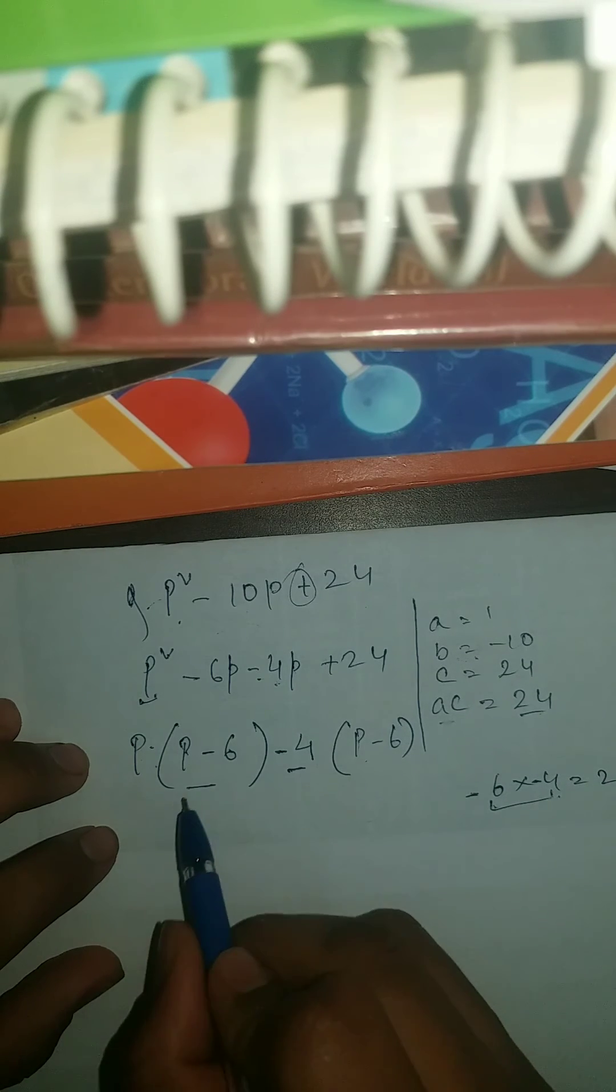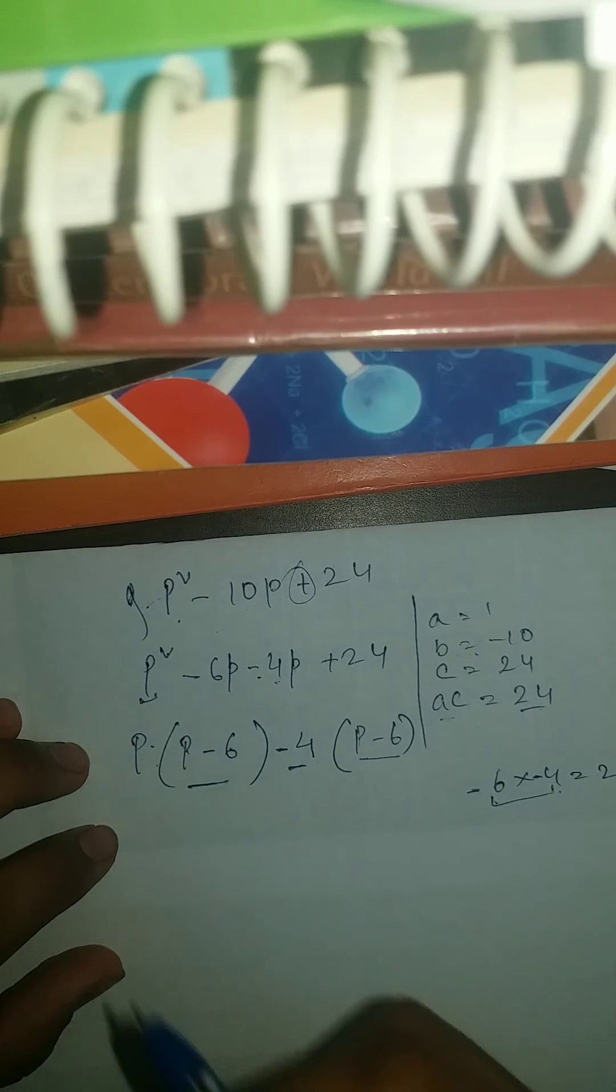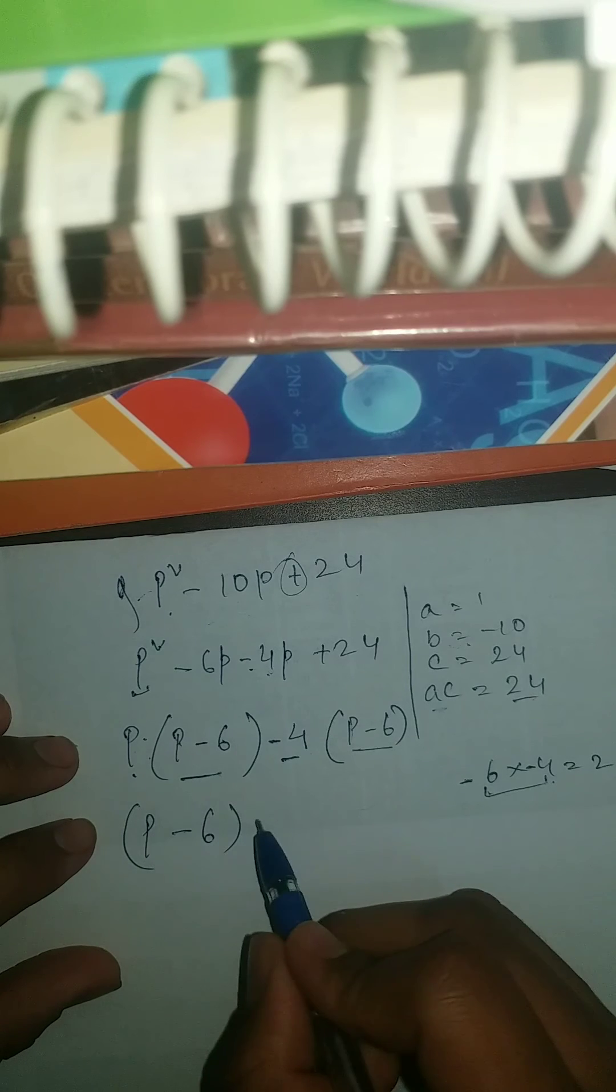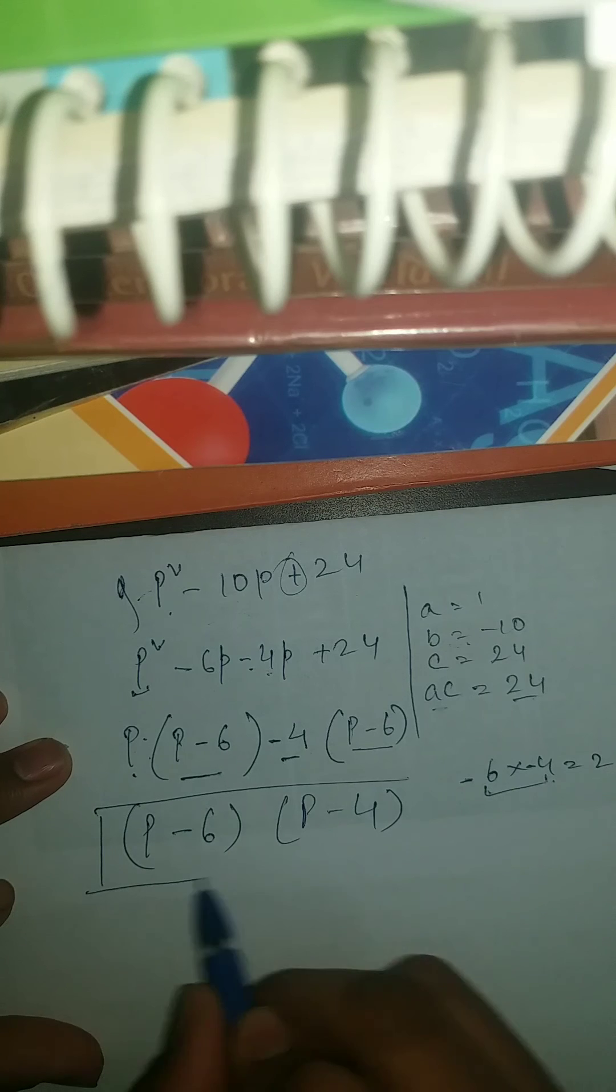So here, now we can see P minus 6, P minus 6 is your common. So we take this common and we're left with P minus 4. So P minus 4 here. And this is our answer.